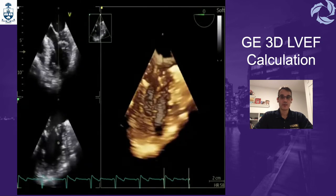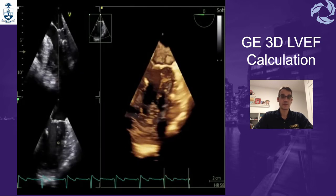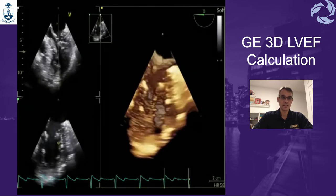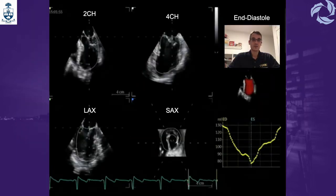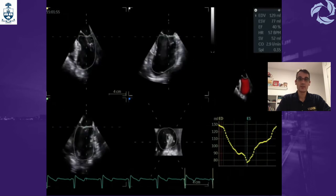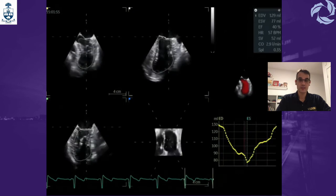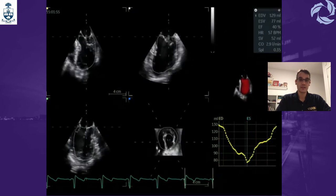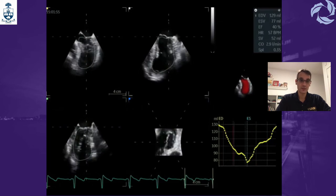To calculate the 3D left ventricle ejection fraction with the Vivid, acquire a 3D dataset and use the Vivid software to position reference points following the instructions — first in end-diastole from the two-chamber, four-chamber, long axis, and short axis views, and then in end-systole. Once the reference points are positioned in both frames, the software generates the output image from which you can obtain LV ejection fraction, stroke volume, and cardiac output.